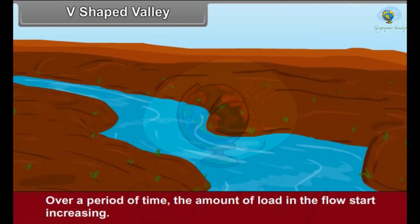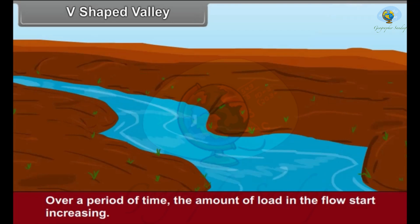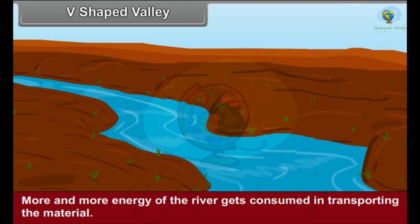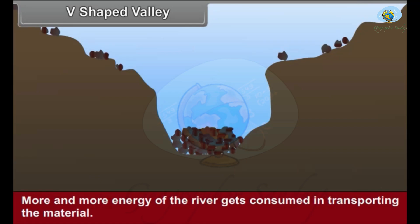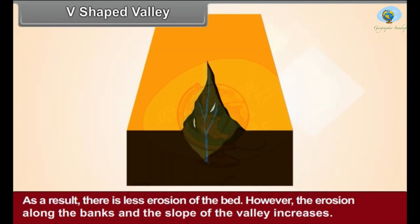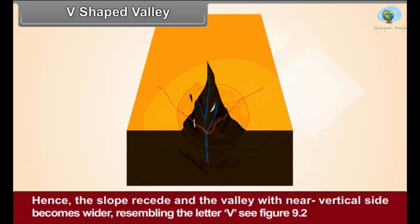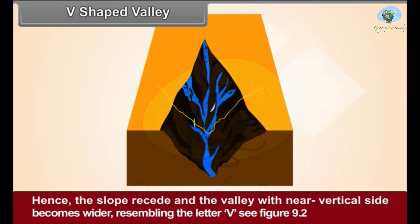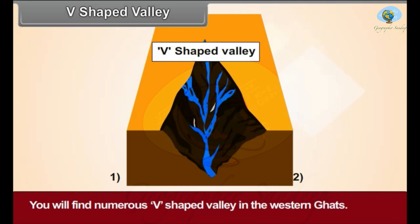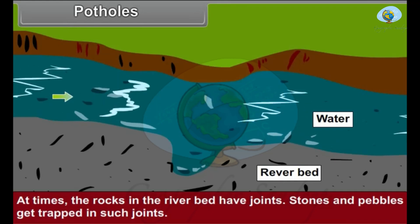V-shaped valley: Over a period of time the amount of load in the flow increases, and more energy of the river is consumed in transporting the material. As a result there is less erosion of the bed; however, erosion along the banks and slopes of the valley increases. The slopes recede and the valley with near-vertical sides becomes wider, resembling the letter V. You will find numerous V-shaped valleys in the Western Ghats.